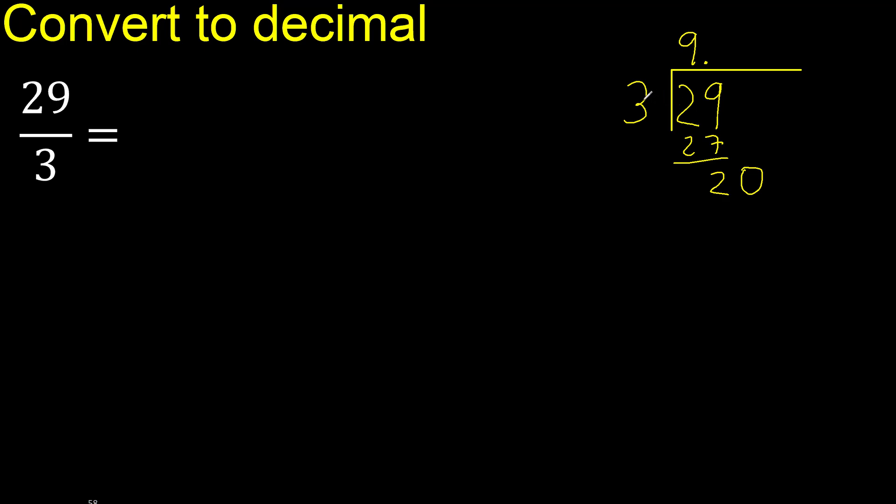3 multiplied by 6 is 18, 20 minus 18 is 2. Always complete with 0, 0. Point, point is here, ok.